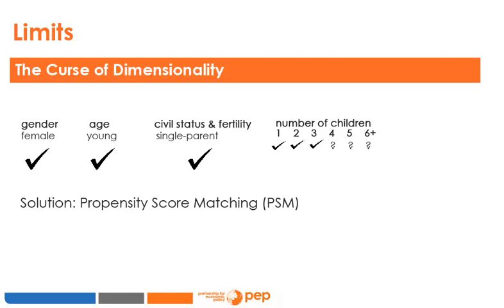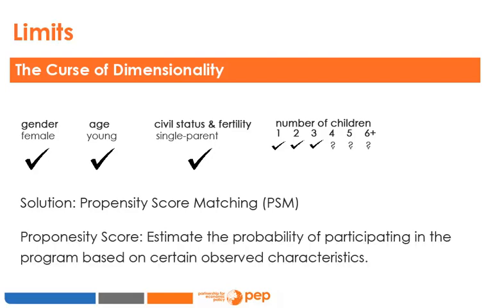With propensity score matching, it will no longer be necessary to match each participant with a non-participant who presents exactly the same observed characteristics. It will be sufficient to estimate the probability of participating in the programme based on certain observed characteristics. This probability, called the propensity score, is a number between 0 and 1 which summarises all observed characteristics that influence participation in a single real number. Calculating the propensity score is extremely easy in practice, and in this course we will take the time to understand the process, which requires the use of discrete choice models.